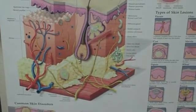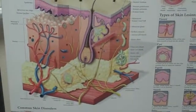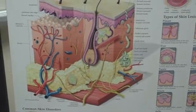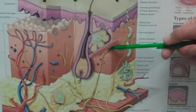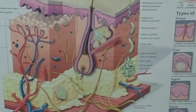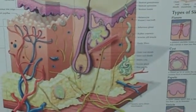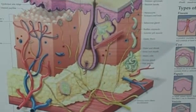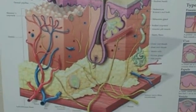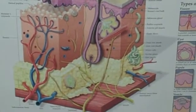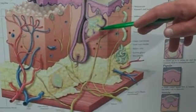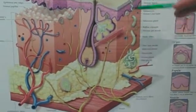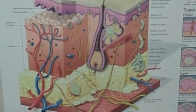We have erector pili muscles right there — they pull up the hair, causing goosebumps. We should have a sweat gland in there. That's just a sebaceous gland. There's a sweat gland. And then we have a sebaceous gland. So it's our sweat gland and sebaceous gland. And that's our integumentary system.